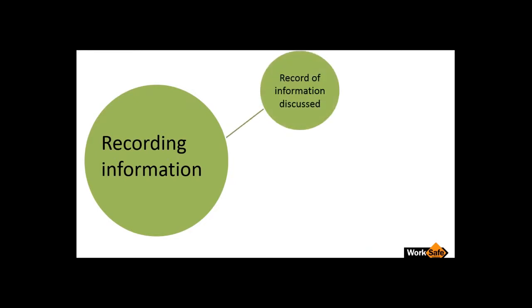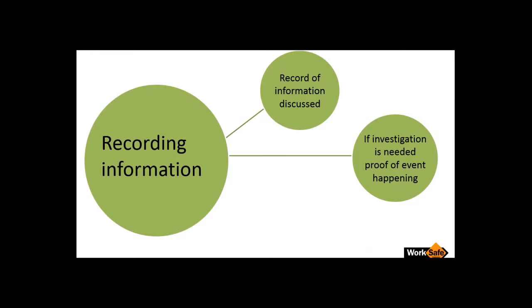Now, recording information. This is the information we use to actually prove that we've done what we said we're going to do through our policy and procedure. It gives you a record of information discussed or conveyed in your policy or procedure. And if an investigation is needed, it's proof of an event happening — so if things go wrong and an inspector comes along, you can show clear and concise documentation proving you've done what you said you'd do. Finally, it might help you identify flaws in the system — as you go through using your recording information, you might see that people are not filling it out correctly, giving you a starting point to review the system.